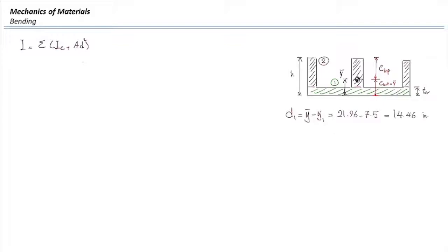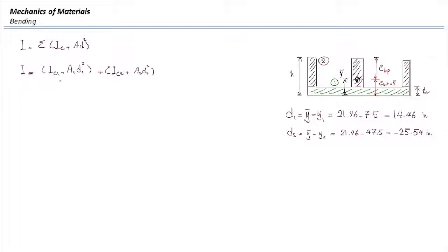Y1 was 7.5 millimeters, giving D1 as 14.46 mm. Similarly, D2 equals Y-bar minus Y2, giving negative 25.54 mm. The sign of D doesn't matter because we work with D squared. Starting with section one, we have IC1 plus A1·D1². For section one, we're determining the moment of inertia about the horizontal axis, where width B is parallel and height TW is perpendicular. So IC1 equals B·TW³ over 12.